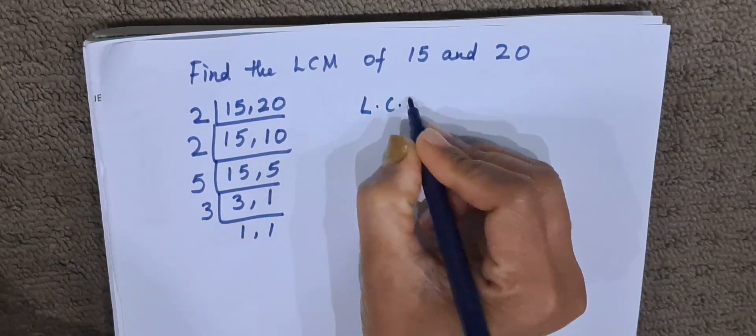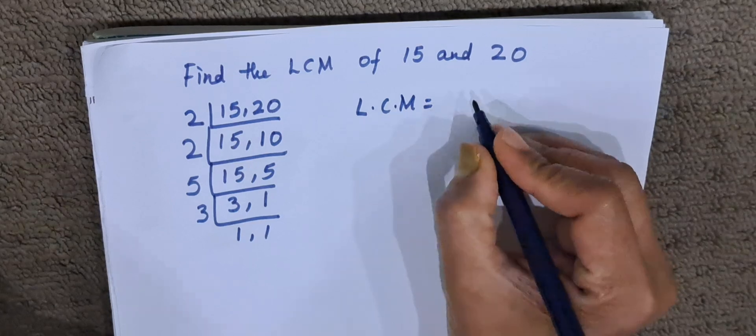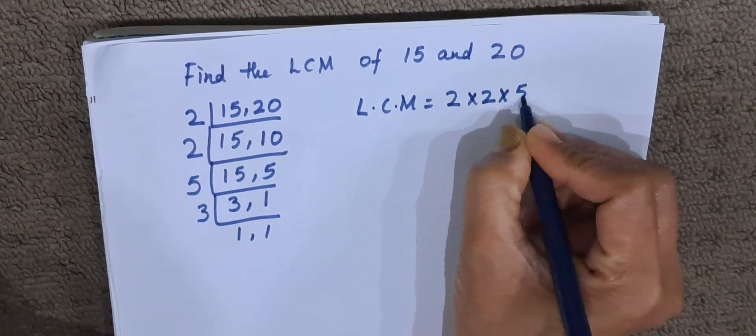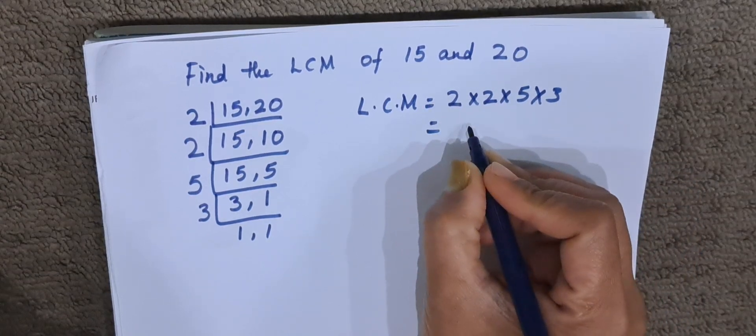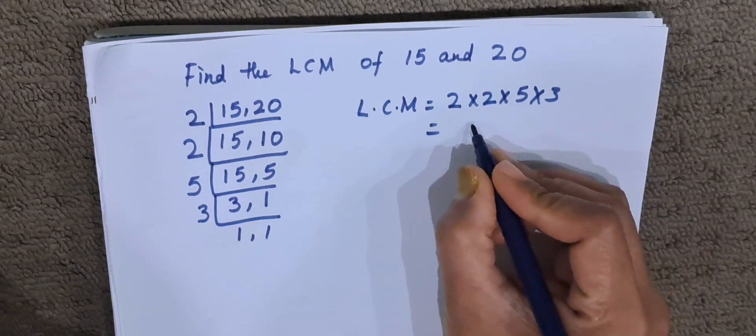We will find the LCM easily by multiplying all the prime factors. 2 times 2 times 5 times 3: 2 times 2 is 4, 4 times 3 is 12, 12 times 5 is 60.